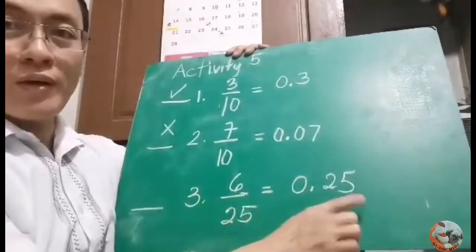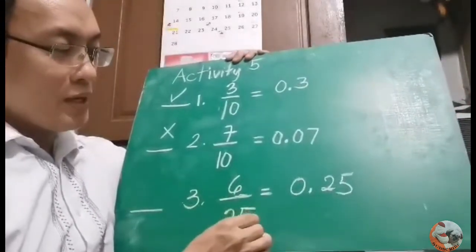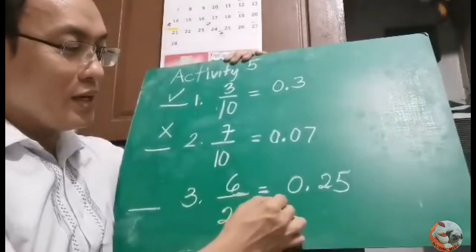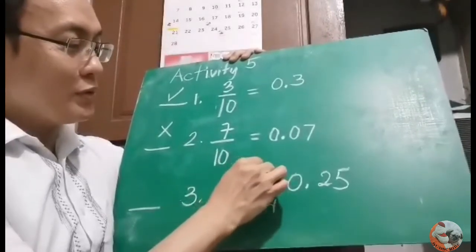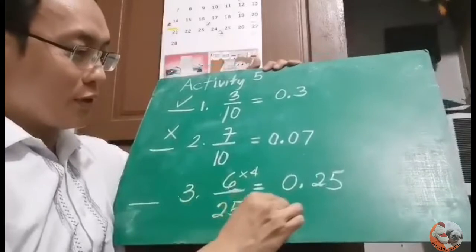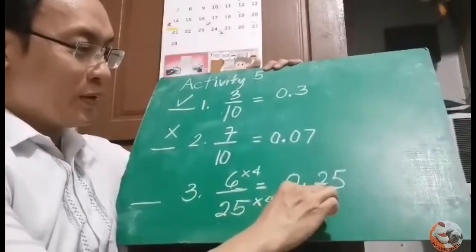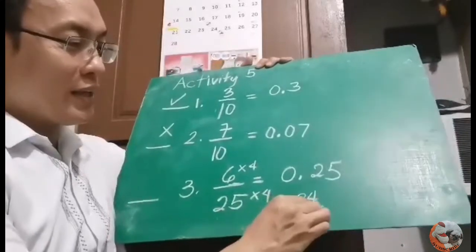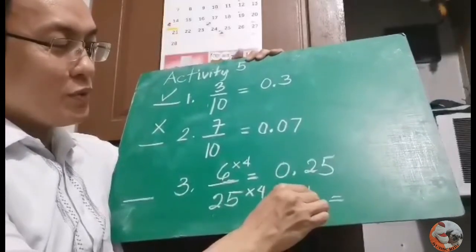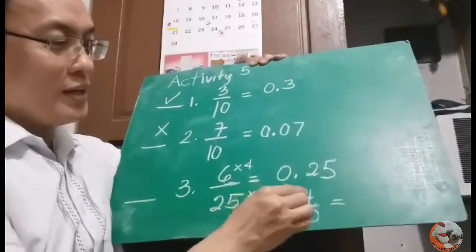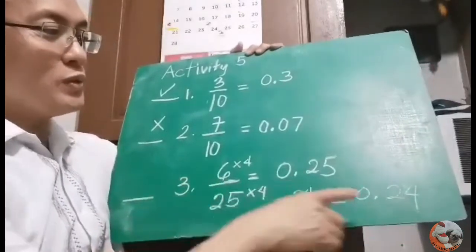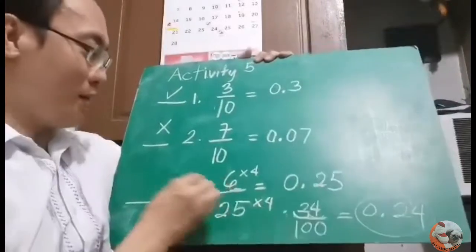Is 6 over 25 equal to 25 hundredths? Let's check. Make the denominator a power of 10 by multiplying by 4. Multiply the numerator by 4 as well: 6 times 4 equals 24, and 25 times 4 equals 100. Change to decimal — there are 2 zeros, move 2 places to the left. It becomes 0.24, or 24 hundredths. So 6 over 25 equals 24 hundredths, not 25 hundredths. This is wrong.